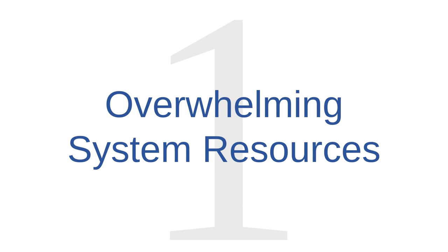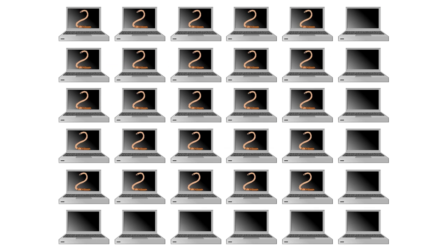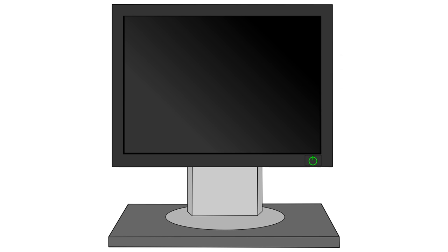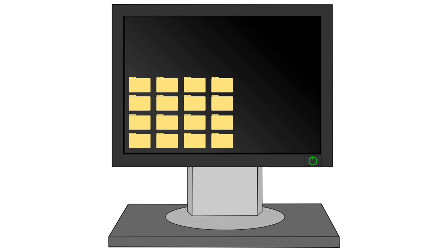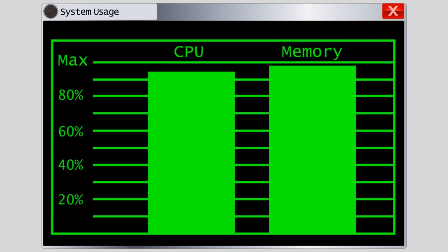Malware function number one is Overwhelming System Resources. Some pieces of malware, especially worms, are programmed to reproduce and spread as quickly as possible. Malware like this can often overwhelm computer or network resources. The spreading worm might use up so much of the network's bandwidth that there isn't enough left over to perform legitimate functions. Some malware creates innumerable files on a computer, clogging up its storage drives and slowing performance. Other malware might use up so much computing power or working memory that the computer is unable to run legitimate programs effectively.